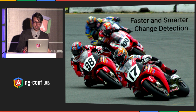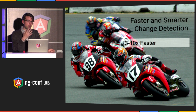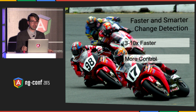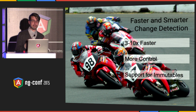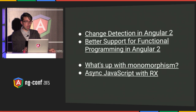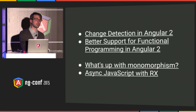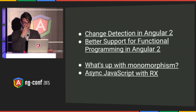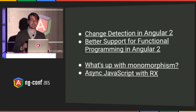So what we've learned: the average time of checking a binding got 10x better. We give you more control over change detection so you can tell it what to check and when, and we use the same mechanism to take advantage of immutables and observables. If you want to learn more, I recommend checking out my blog posts about change detection, immutable objects, observable objects, and functional programming in Angular. Vyacheslav Egorov has an excellent blog about VMs covering polymorphism and monomorphism. And Jafar from Netflix gave an excellent talk about using RxJS. Thank you.